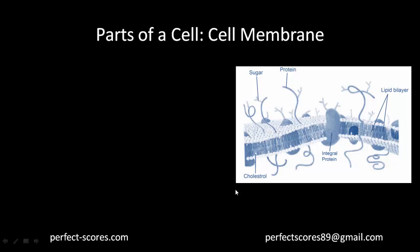Hello and welcome to another video by Perfect Scores. This is Preetinder Kaur. In this video we are going to start off with the different components of the eukaryotic cell. In the previous video we covered cell theory, what is a cell, the differences between eukaryotic and prokaryotic cells, and the prokaryotic cell structure in detail along with ribosomes. So in this one we are going to start off with the description of the components of the eukaryotic cell, and the first one is the cell membrane.